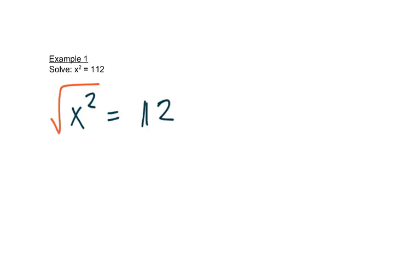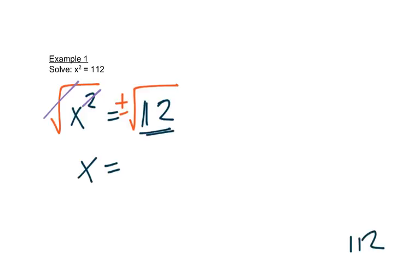So we'll take the positive and negative square root, and that gives us two answers. The squared and the square root cancel each other out, as we discussed in the last module. On the right-hand side, we need to simplify √112. We divide by 2 because it's even, giving us 56, then divide by 2 again to get 28.